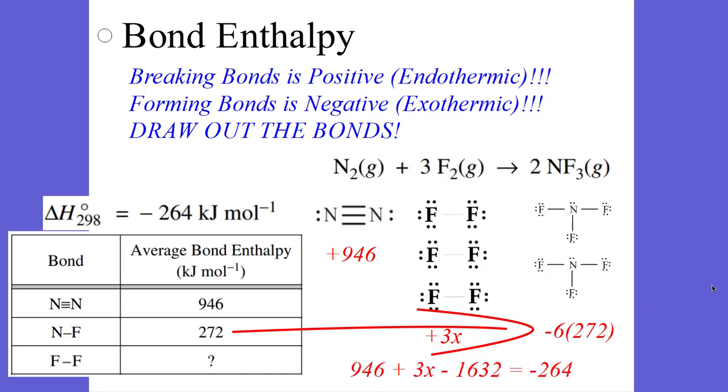So we create a little bit of an equation, 946 plus 3x, because that's breaking the bonds, it's positive, minus 6 times 272, which is negative 1632, and that equals your bond enthalpy of negative 264 kilojoules per mole.